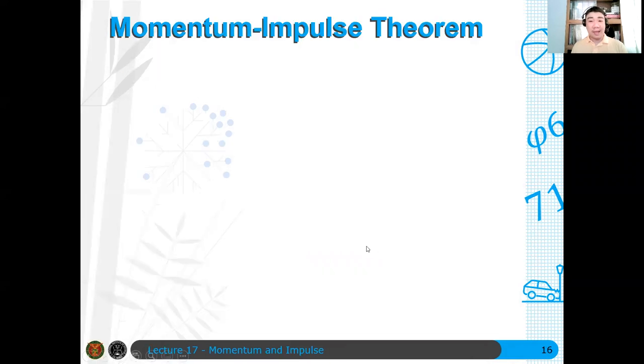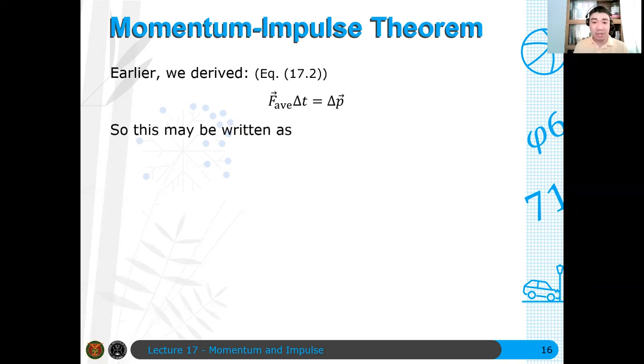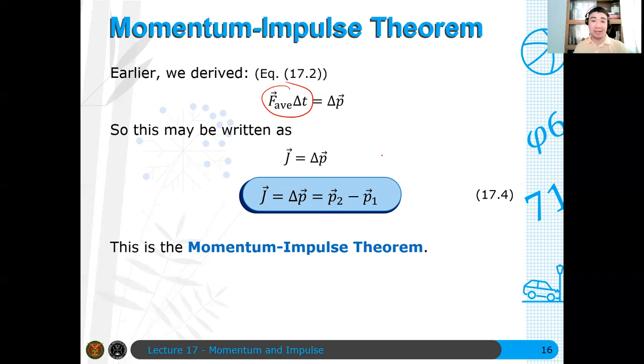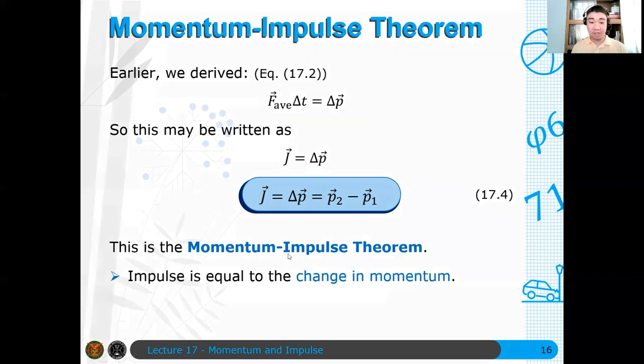Now, so again, kung nakita nyo na ito kanina na J is equal to delta P, that's basically your momentum impulse theorem or impulse theorem or impulse momentum theorem. That's F_average delta T is delta P. And if you, this is actually J or your impulse, and therefore we see that J is just delta P. And hence you have J is delta P or P2 minus P1, implying that the impulse is the change in the momentum of an object. So we have the momentum impulse theorem or in some books, impulse momentum theorem. That's the momentum impulse theorem. So we have shown that the impulse is the change in the momentum of an object or of a system.